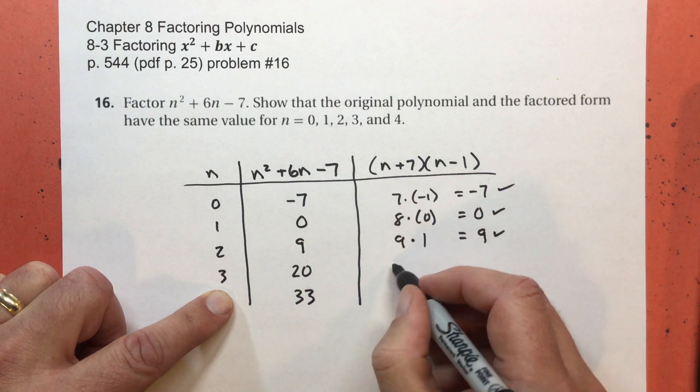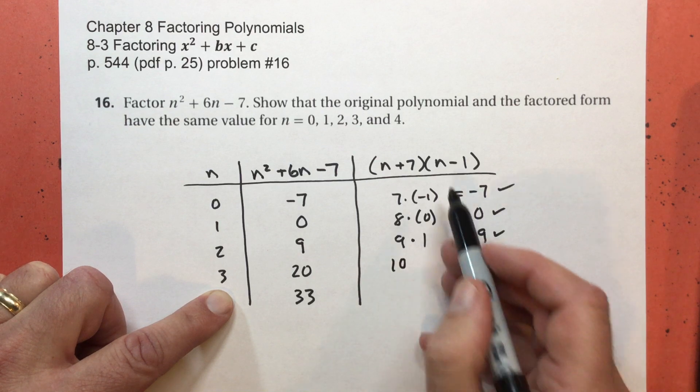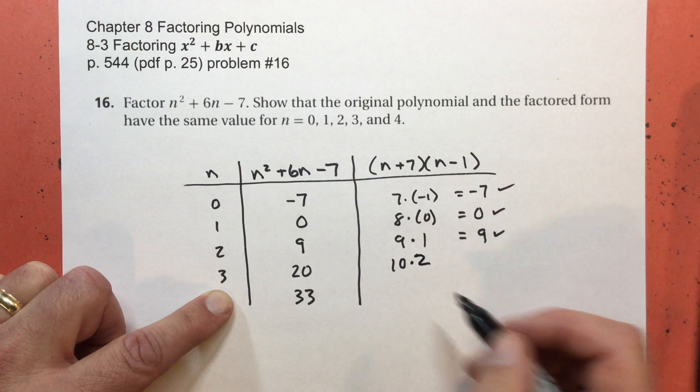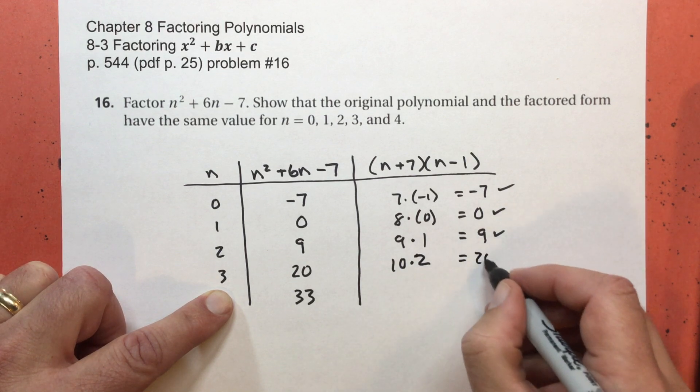Let's try 3. 3 plus 7 is 10. 3 minus 1 is, sorry, times 2. Forgot to put that in there. That equals 20.